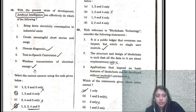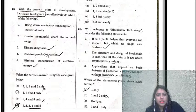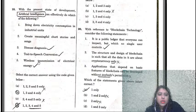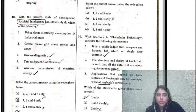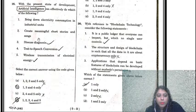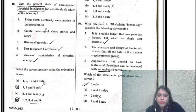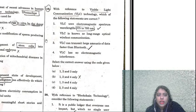Artificial intelligence is one of the best sections. At the current state of AI development, it can effectively do: bring down electricity consumption, create meaningful short stories, disease diagnosis, text-to-speech conversion, and wireless transmission of electric energy. Disease diagnosis is possible at an advanced AI level; speech is a regular AI example. We need to be sure about the electricity consumption option. This question covers the breadth of current AI capabilities.